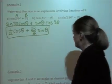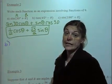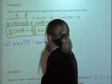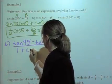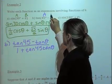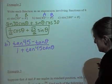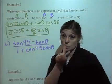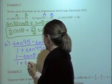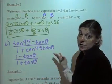Now let's take a look at part B: we have tangent of 45 degrees minus theta. This is a difference identity for tangent. We plug in 45 for A and theta for B. Tangent of 45 degrees is 1, and 1 times tangent of theta is just tangent of theta.